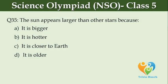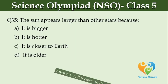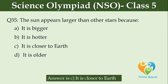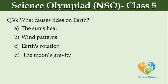The sun appears larger than other stars because: Option A: it is bigger. Option B: it is hotter. Option C: it is closer to Earth. Option D: it is older. What causes tides on Earth? Option A: the sun's heat. Option B: wind patterns. Option C: Earth's rotation. Option D: the moon's gravity.